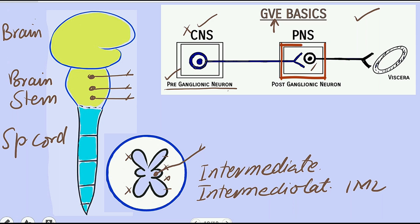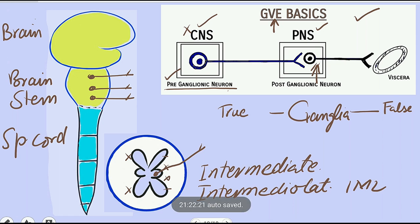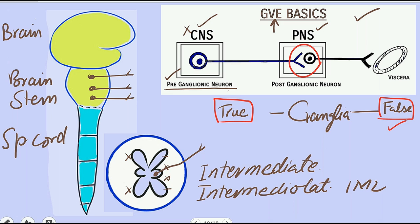Coming to the location of the post-ganglionic neuron in the peripheral nervous system: when we have a neuronal cell body in the peripheral nervous system, we name it a ganglia. Ganglia can be a false ganglia or a true ganglia. When neuronal cell bodies are present with a synapse, this collection is known as true ganglia. When neuronal cell bodies are present without a synapse, these are named false ganglia. In the general visceral efferent component, the post-ganglionic neuron is present in the form of true ganglia — all ganglia in the GVE component are true ganglia.